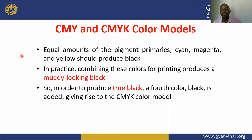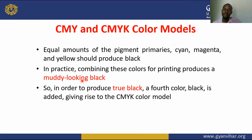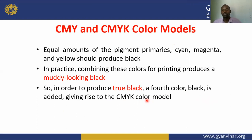Equal amounts of cyan, magenta, and yellow pigment primaries should theoretically produce black, but in practice they produce a muddy-looking dark black. Therefore, to produce a true black, a fourth colour — black (K) — is introduced, giving us CMYK. Using CMY produces muddy black; using CMYK produces true black.